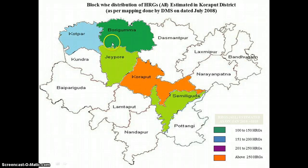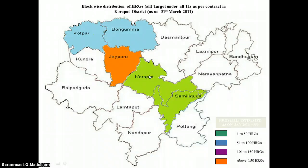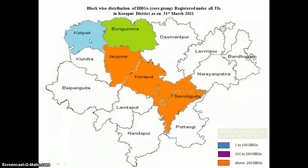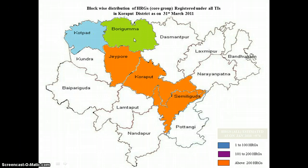This is an estimate of FSWs in the mandals. This is the target given based on the estimates, and here we see the actual number registered. In Jayapur, Koraput, and Simdiguda, we have more than 200 identified and registered HRGs across these three mandals. Koraput has about 96 FSWs registered against a target of 72. In Boriguma, there is an estimate of about 100 plus, a target of 67, and registration is quite high at about 105 FSWs registered.